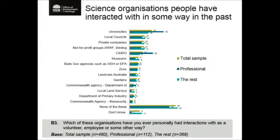We then asked what kinds of science organizations people had interacted with in the past. Not too surprising — the number one was universities, followed by not-for-profits, etc. But as you can see, the majority of people had absolutely no interaction with these organizations. This is something to keep in mind when you're thinking about the design of your projects.